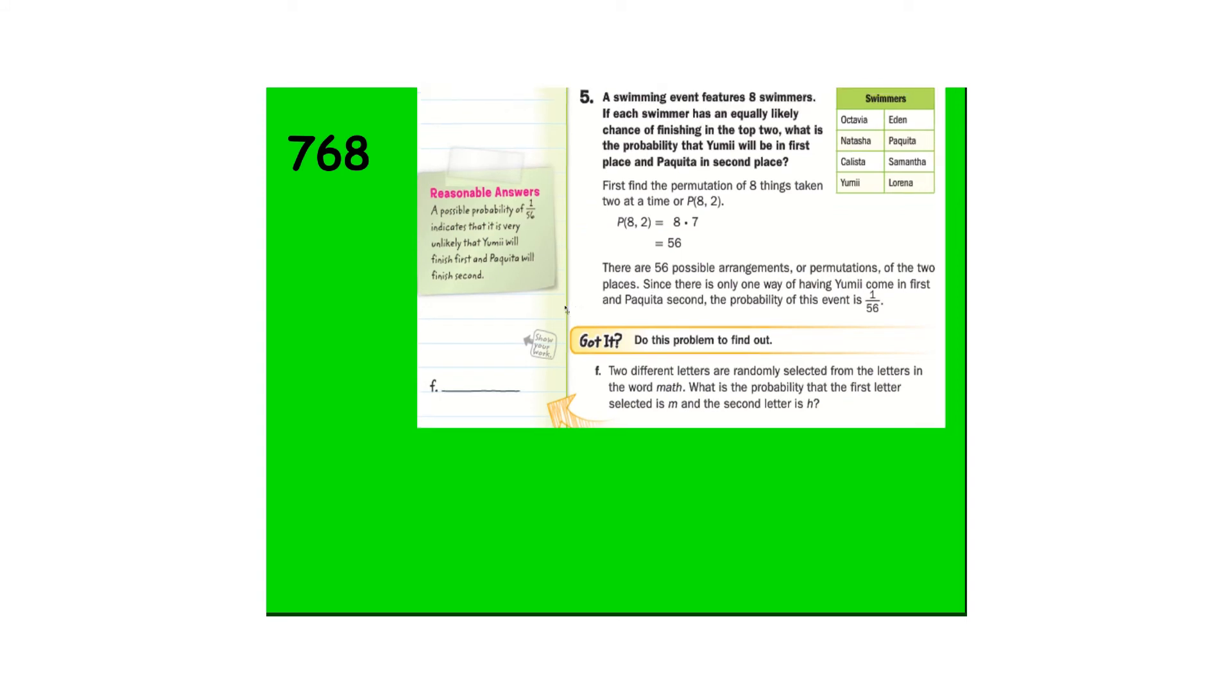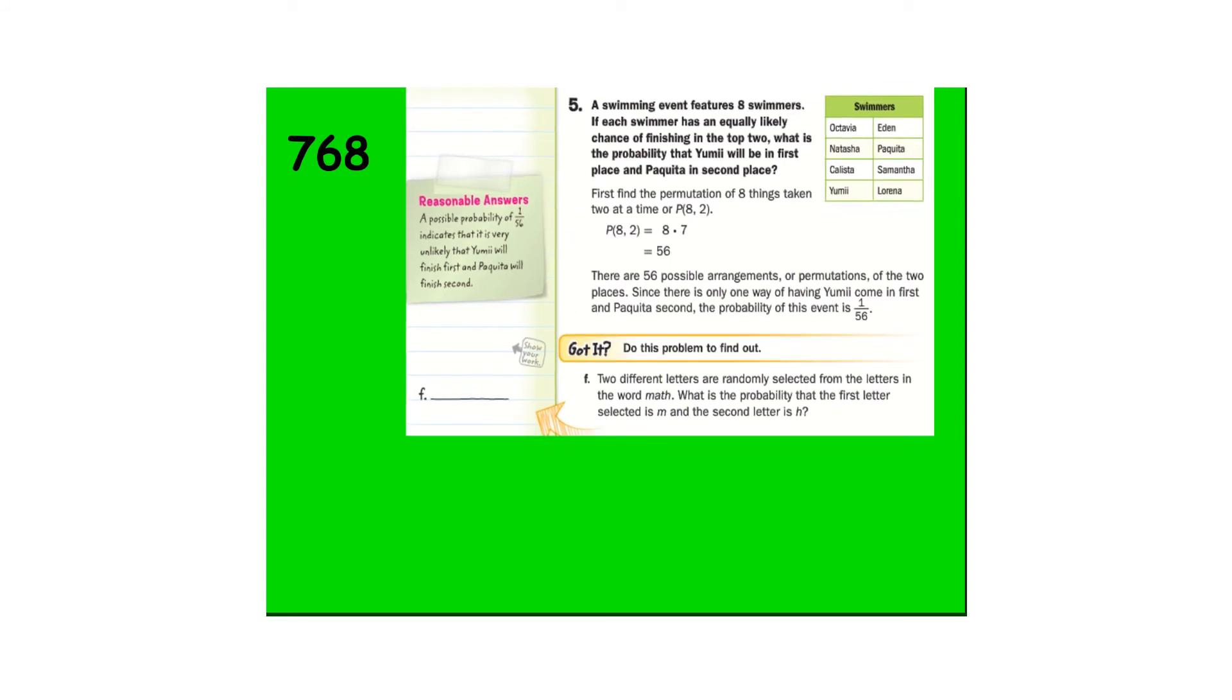Page 768. Swimming event has 10 swimmers. If each swimmer has an equally likely chance of finishing in the top two, that's eight times seven. That's 56 ways. There's only one way of having these two come in first and second. So that's one out of 56.